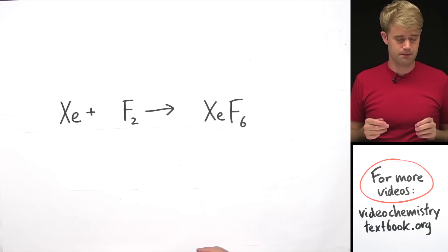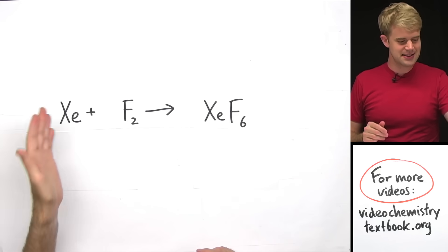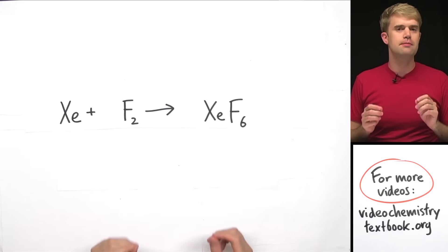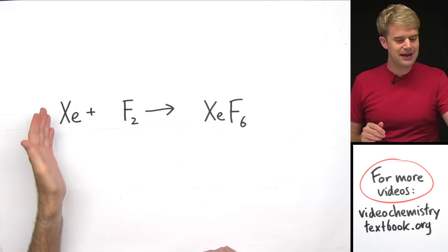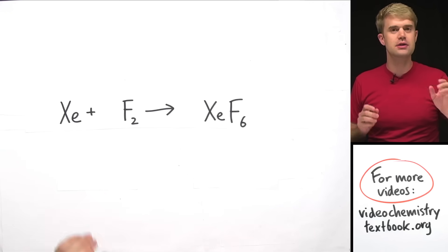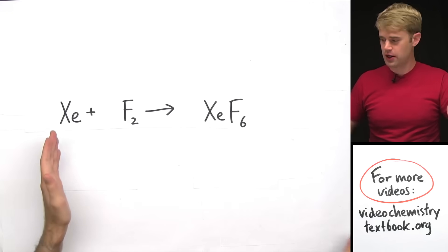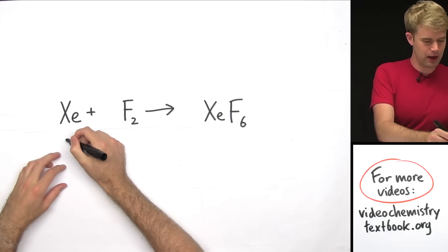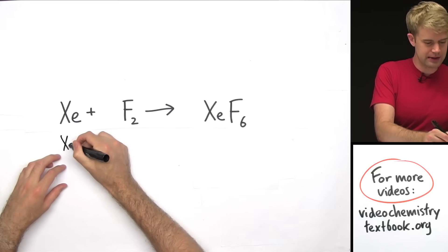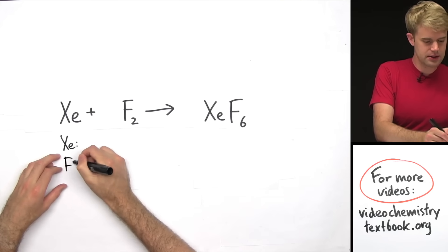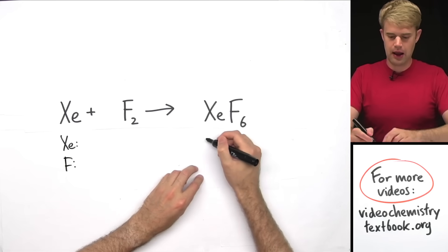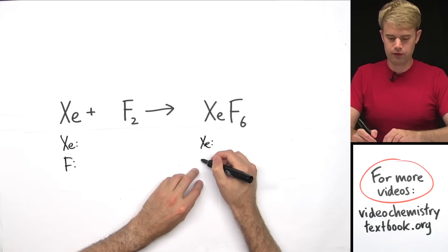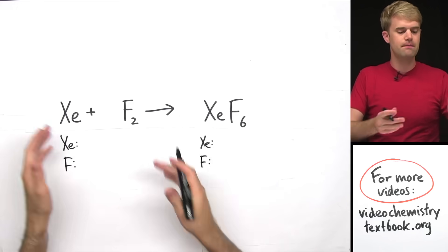Here's our first equation. We've got xenon and fluorine. We want to keep track of how many atoms of these elements we have on both sides of the equation, so we're going to make a little chart with xenon and fluorine on each side.